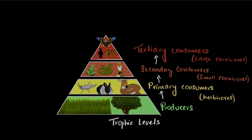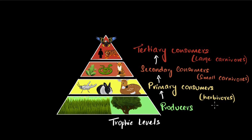Let's explore trophic levels and how energy flows within them. A trophic level is a diagrammatic representation of how we all get our food. At the bottom we have the producers, which are basically plants and vegetation. They're called producers because they produce their own food from sunlight. Then come the primary consumers like deer, rabbits, and insects — basically herbivores that eat the producers directly.